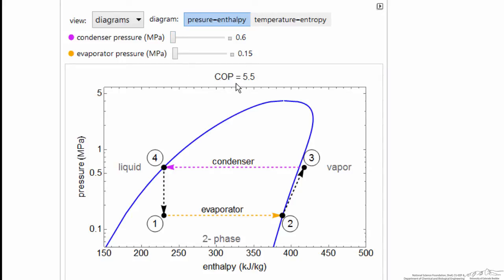The coefficient of performance is how much heat we transfer into the evaporator - this is our objective to remove heat from something at low temperature - divided by how much work we have to put in to go from two to three to raise the high pressure.